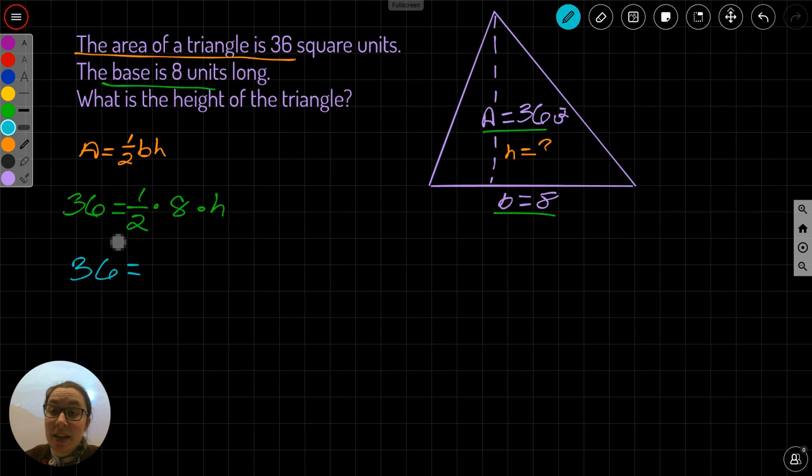1 half times 8. Well, 1 half times 8 is 4, 1 half of 8 if you would. So 4 times, or I just write 4H, 4 times H. 36 equals 4H. And now I have something I recognize. I have a one step equation.